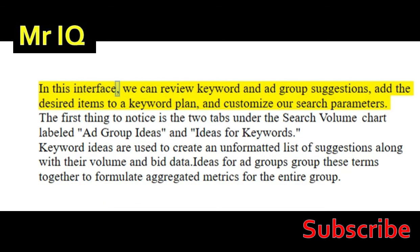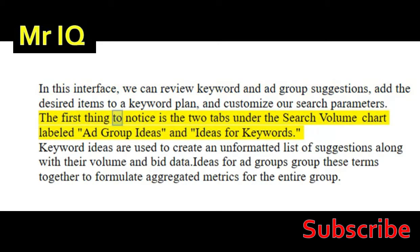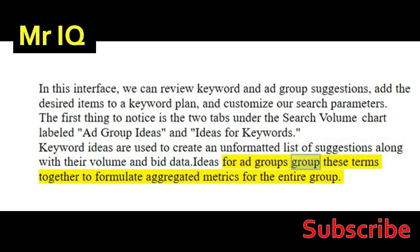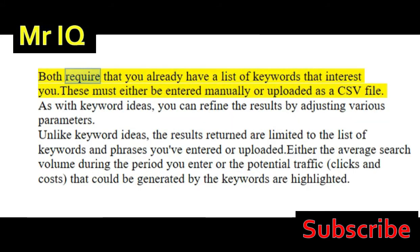In this interface, we can review keyword and ad group suggestions, add the desired items to a keyword plan, and customize our search parameters. The first thing to notice is the two tabs under the search volume chart labeled Ad Group Ideas and Ideas for Keywords. Keyword Ideas are used to create an unformatted list of suggestions along with their volume and bid data. Ideas for Ad Groups group these terms together to formulate aggregated metrics for the entire group.